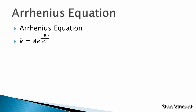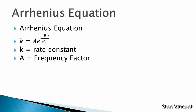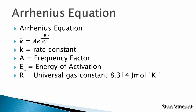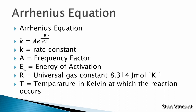The Arrhenius equation is written as K = A × e^(−Ea/RT). K represents the rate constant, determined experimentally. A represents the frequency factor, which is characteristic for a given reaction. Ea is the energy of activation. R is the universal gas constant, 8.314 joules per Kelvin per mole. Temperature is always measured in Kelvin; if you are given degrees Celsius, you want to convert it to Kelvin before you solve — add 273.15 to degrees Celsius to get Kelvin.